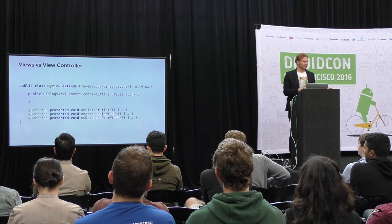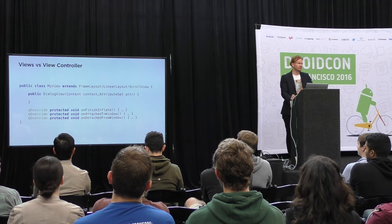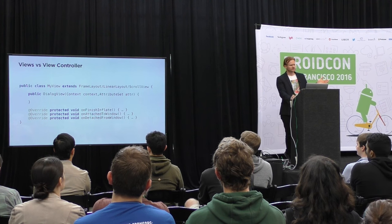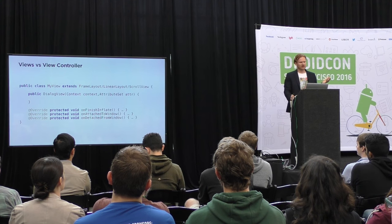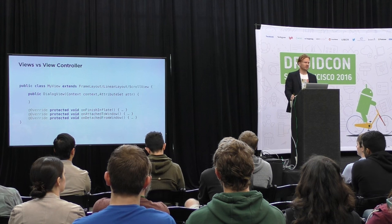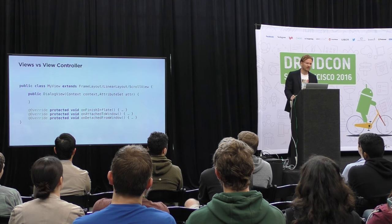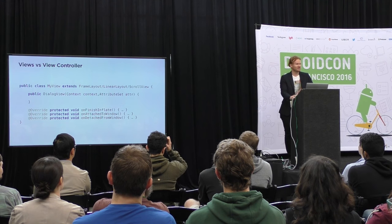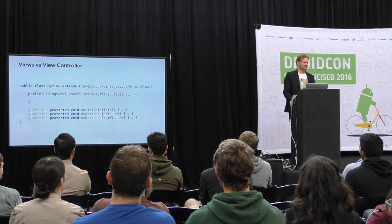So why did we introduce view controller? There are two primary limitations we faced. The first is that whenever you need some common functionality between your views, you can't use inheritance, because in a lot of cases views inherit from different view groups — some from FrameLayout, some from LinearLayout, some from ScrollView. You can use composition over inheritance, but in some easy cases it's annoying that inheritance is not available in your arsenal.